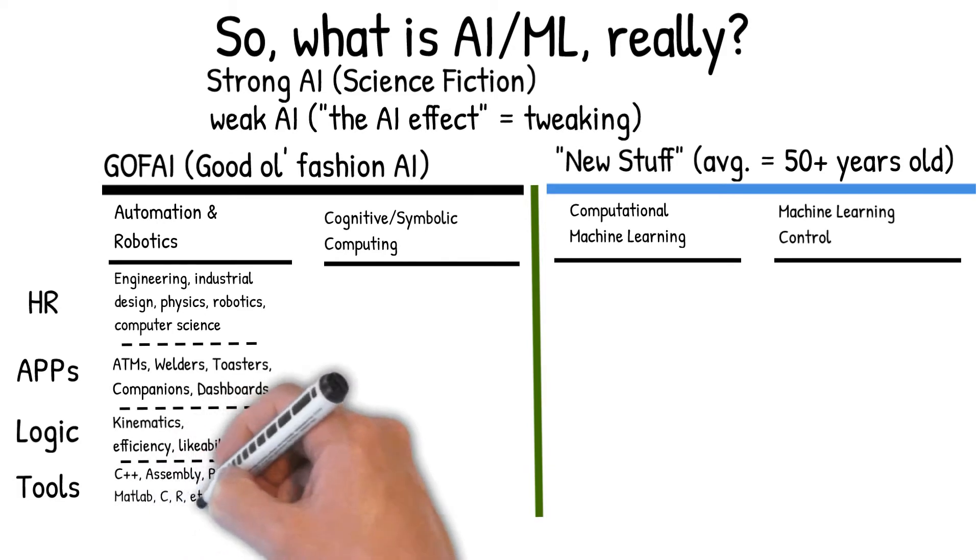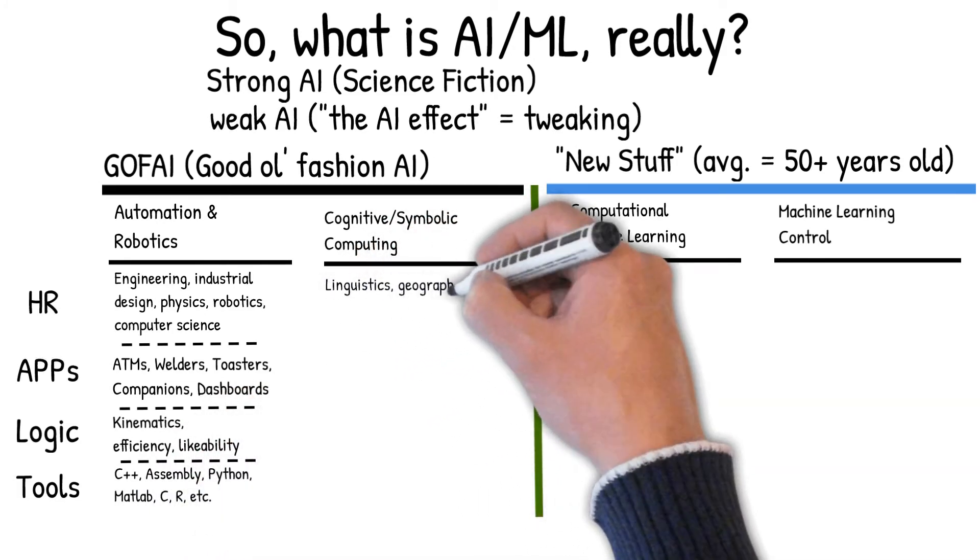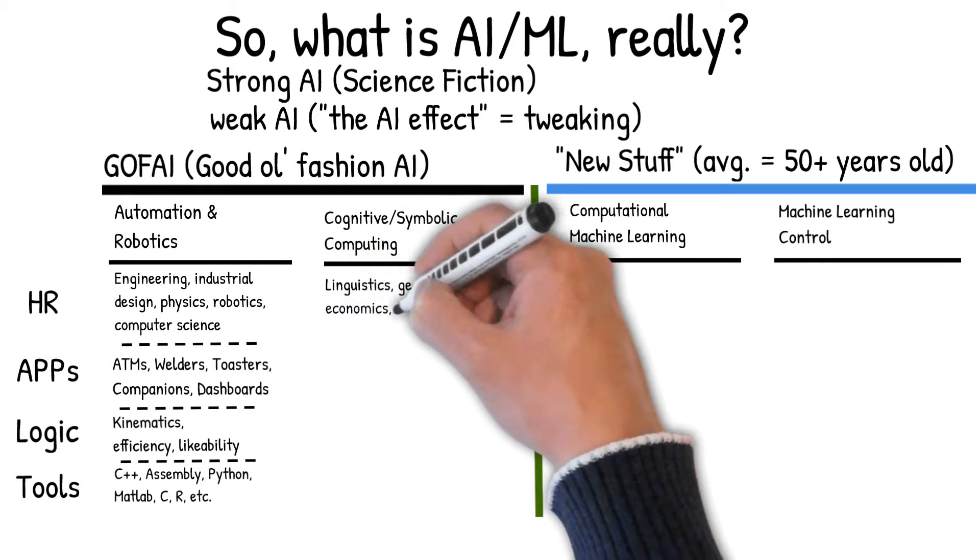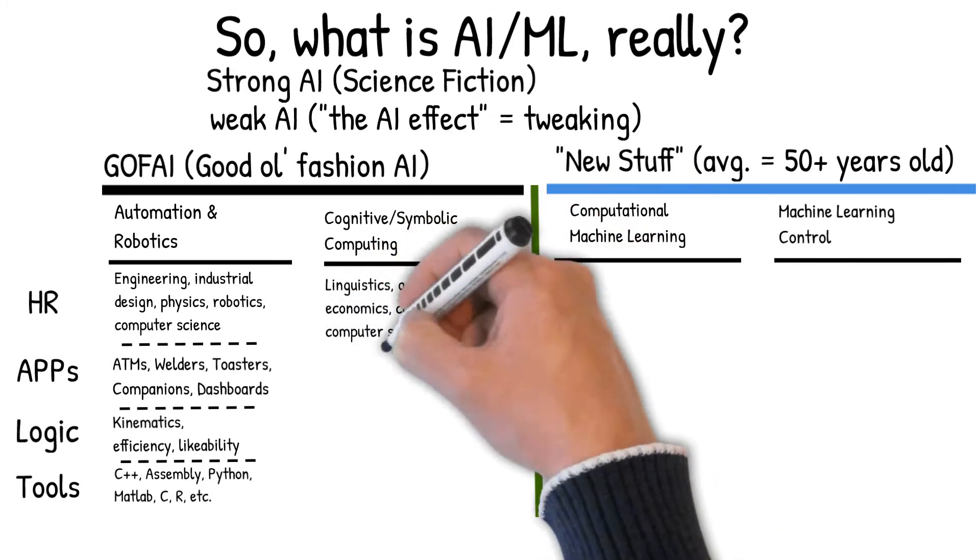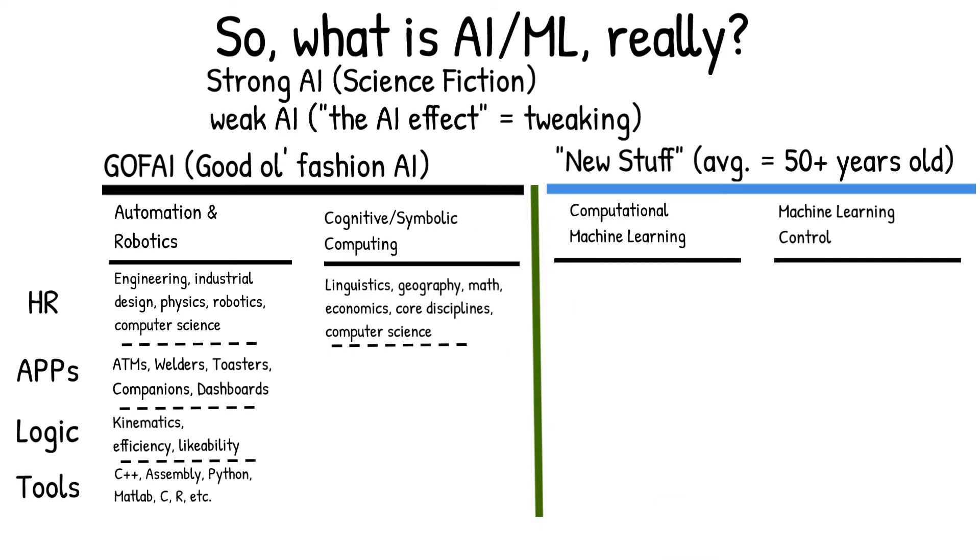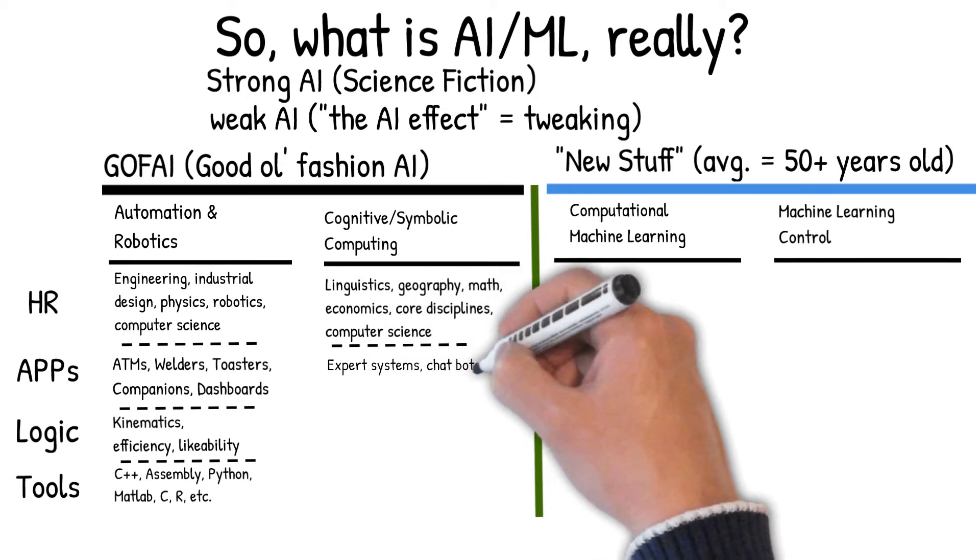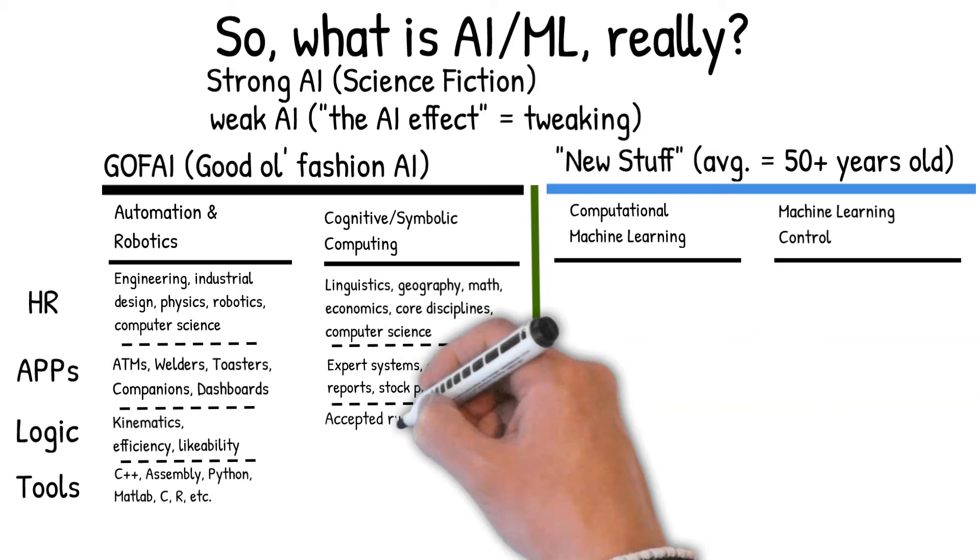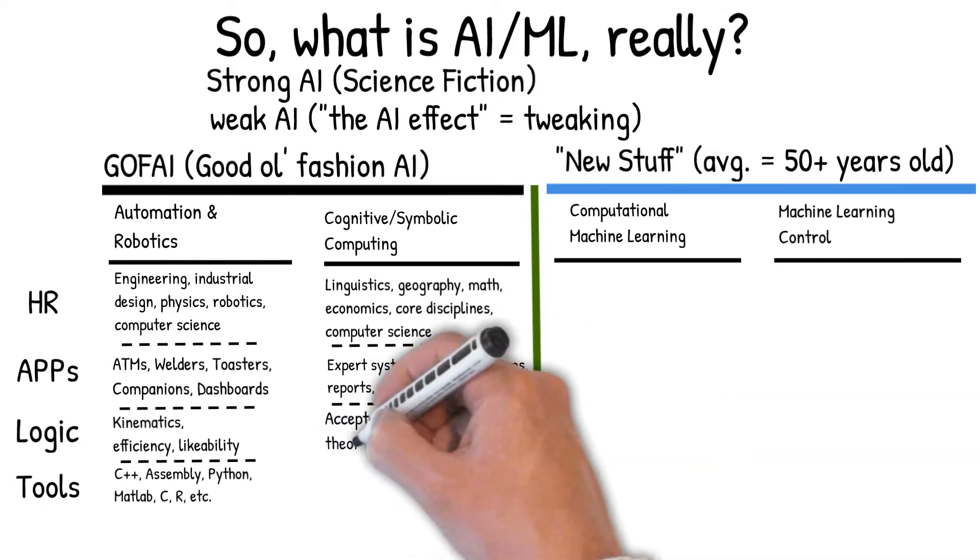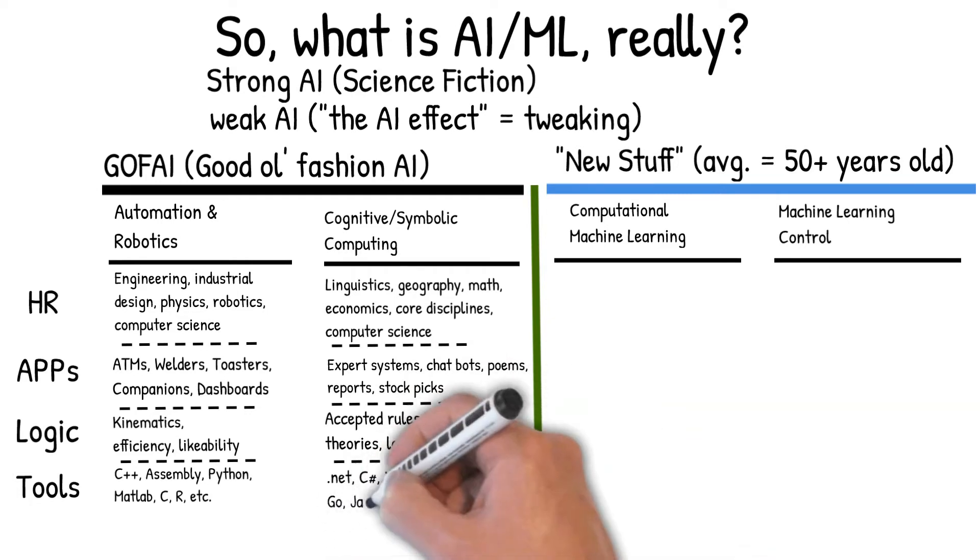In the second bucket, which is cognitive or symbolic computing, they largely rely not on engineers, but on linguists, geographers, mathematicians, the core fundamental subjects that we learn in college, plus a bit of computer science. This branch was often credited for the earliest expert systems or chatbots, but more recently with writing poetry and high-end research reports. And people employed in this branch of AI have a number of computer programs that they actually leverage.